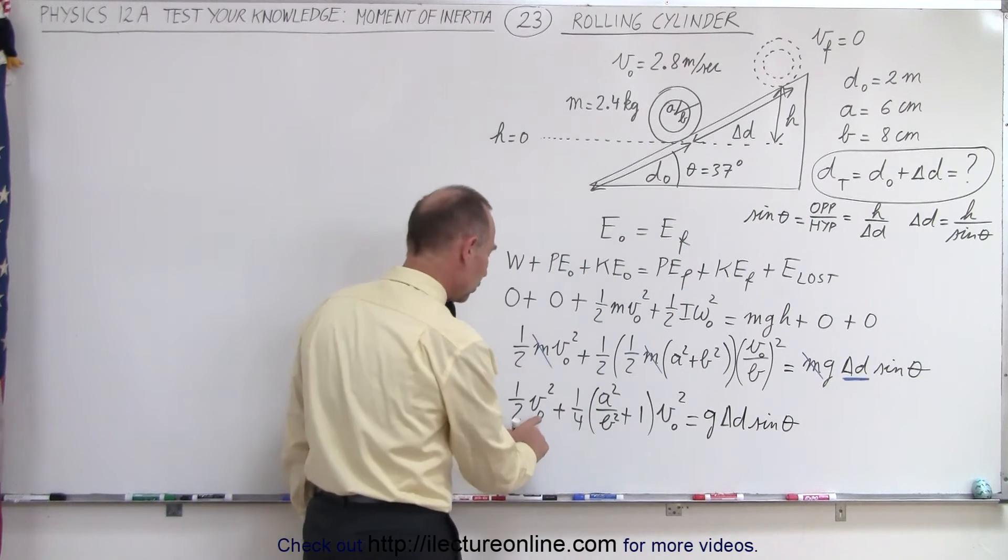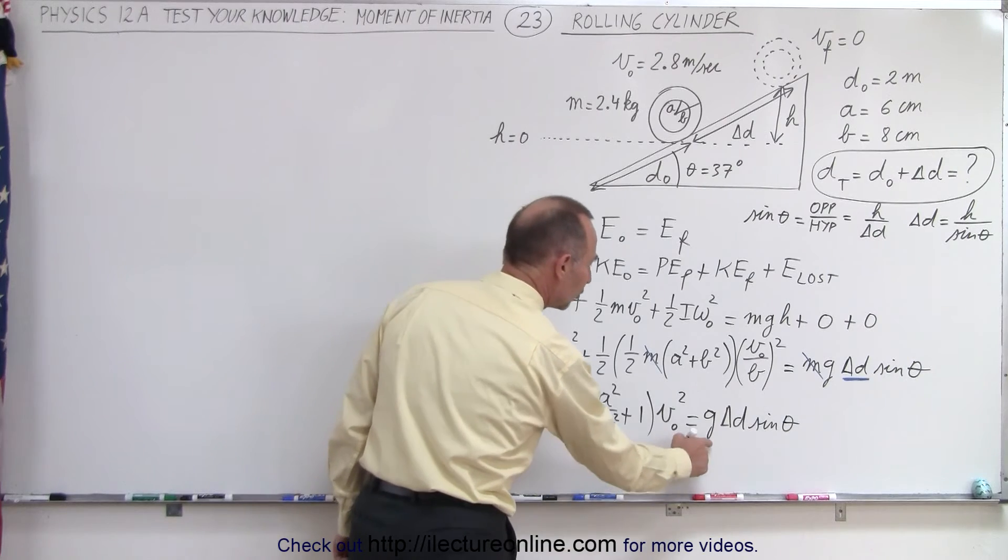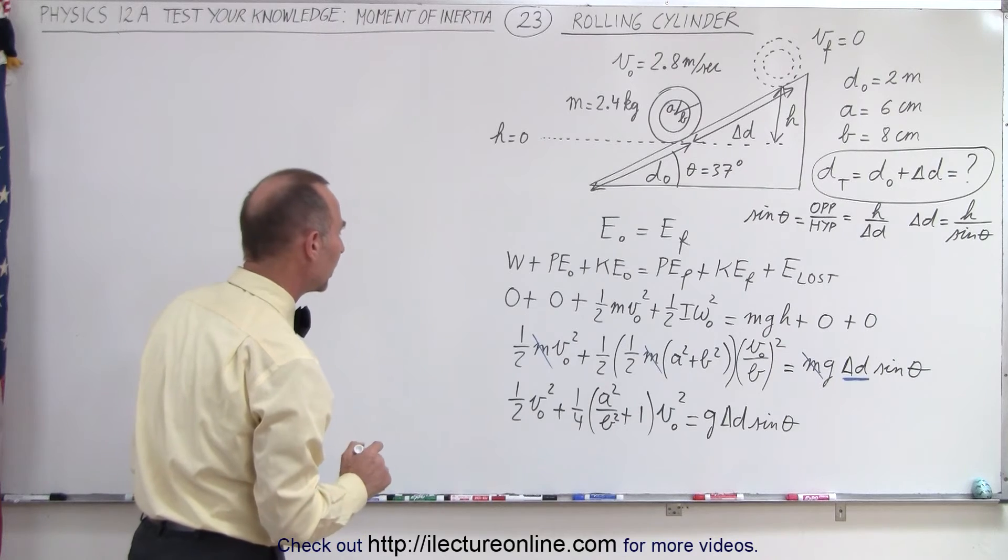Now notice, everything should be known, v-initial is known, a is known, b is known, and we have g and the sine of theta, but first let's calculate it in terms of all those variables to see what we get.